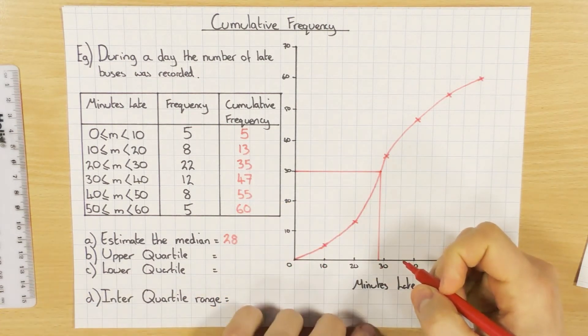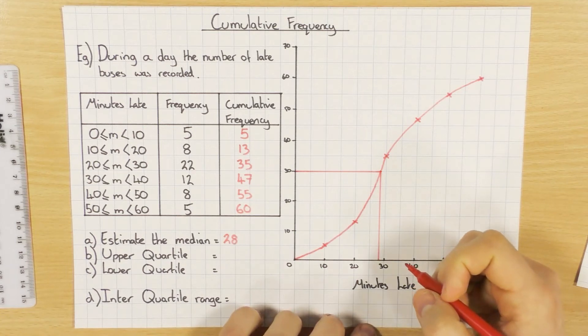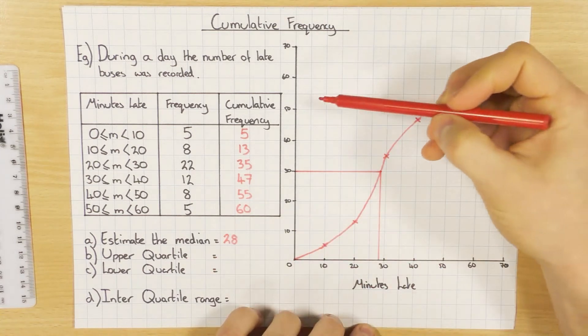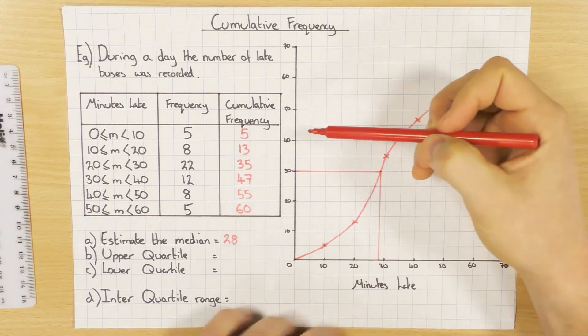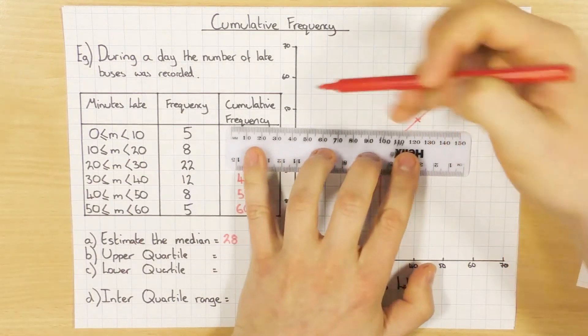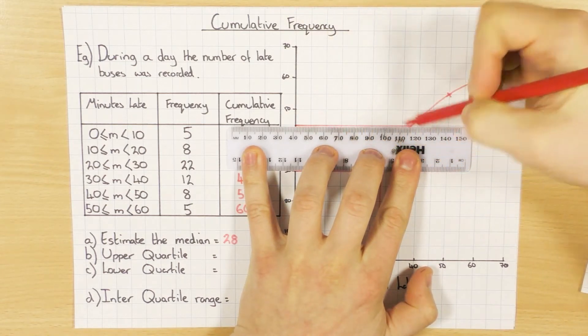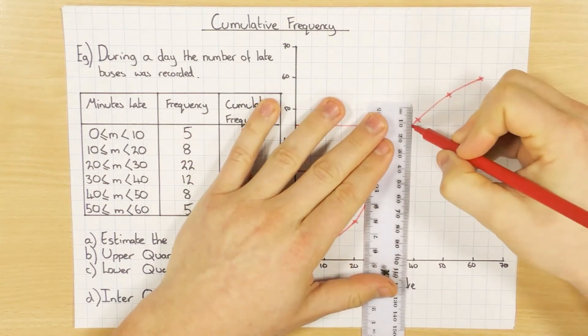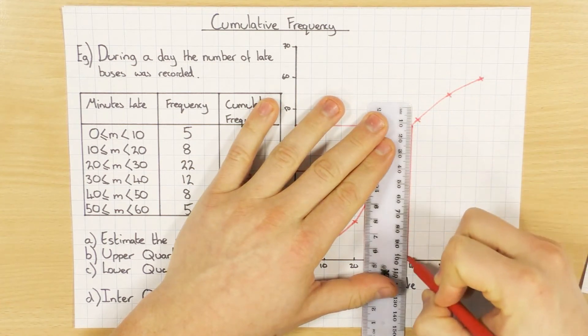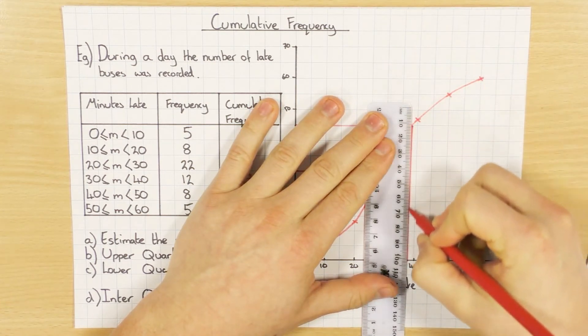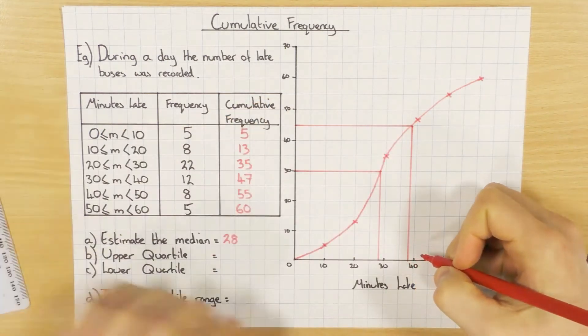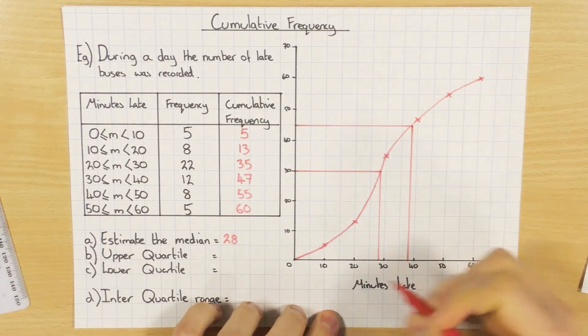Now the upper quartile is 3 quarters of the way up. The upper quartile is 3 quarters. So if the total is 60, 3 quarters would be 45. And it's exactly the same thing. So from 45, going across, and then going down, as you can see there. Make sure you draw these lines on, because again, it's part of your working. And I'm going to say that's 38.